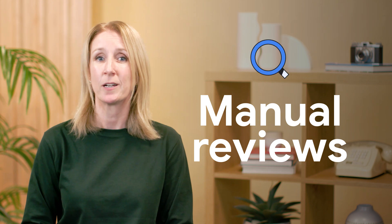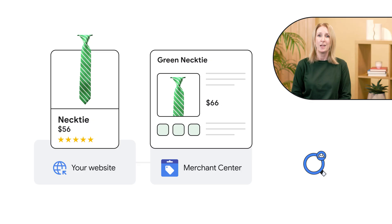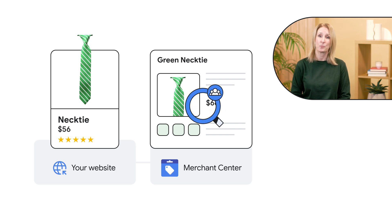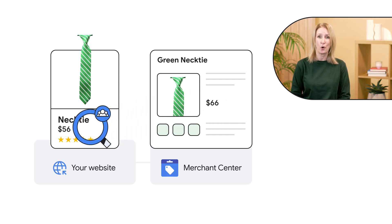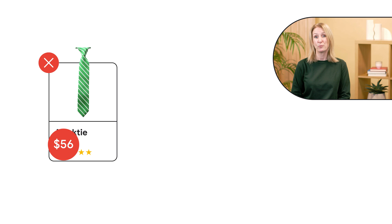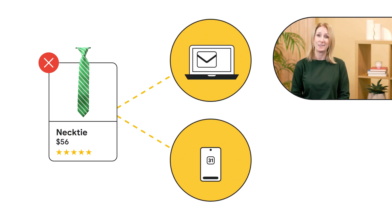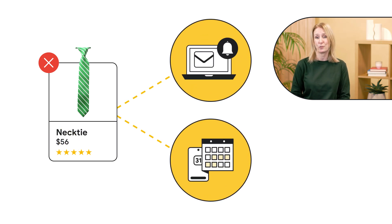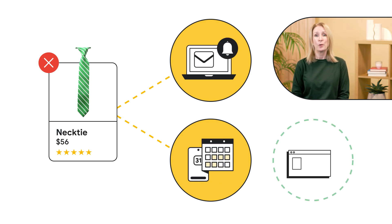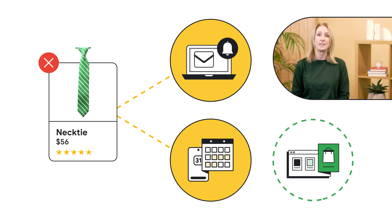Account level reviews are manual reviews conducted periodically by our team. The product prices you've added to Merchant Center are compared against the prices on your online store. If mismatches are found, you'll receive an email notification with examples and a deadline to correct the issues. It's important that you not only fix the examples shown in the email, but also review similar products in your data to prevent further issues.